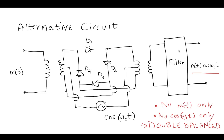Now, this works similar to the diode bridge modulator, but instead of turning from 1 to 0, it goes from 1 to minus 1.